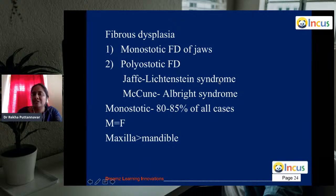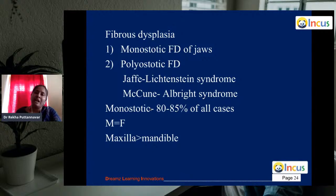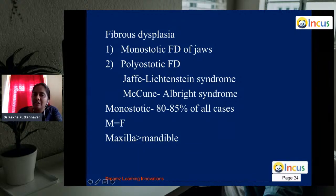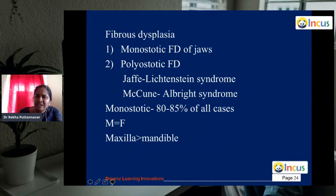In the jaws, maxilla is more commonly affected. When the maxilla is affected, other skull bones like the frontal and sphenoid bones may also be involved. When mandible is affected, it exclusively involves only the mandible. The condition starts from a young age but is detected later when it causes facial bulging. It is a very slow-growing process.